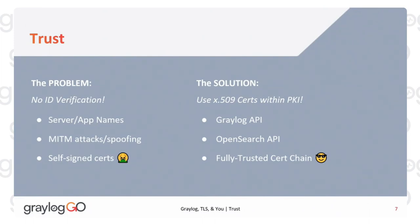By default, there's no mechanism to verify that the server you are connecting to is in fact the server you're intending to connect to. This includes server and application names, and it's prone to man-in-the-middle attacks or spoofing. Self-signed certs are gross and should not be used in an enterprise deployment. The solution is to make certs within an organized and planned public key infrastructure — PKI.